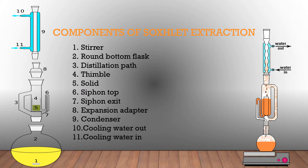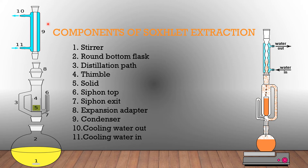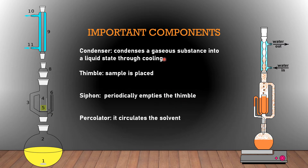Here are the components of Soxlet extraction. First, you have the stirrer and then the round bottom flask. Number three is the distillation path. Number four is the thimble. Number five is the solid or your sample. Six and seven are your siphon top and exit. Number eight is the expansion adapter. Nine is the condenser. And numbers ten and eleven are the cooling water out and in.